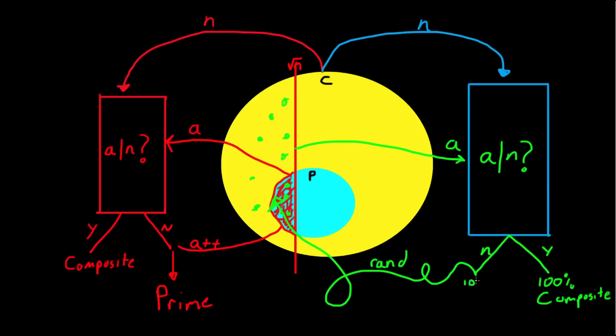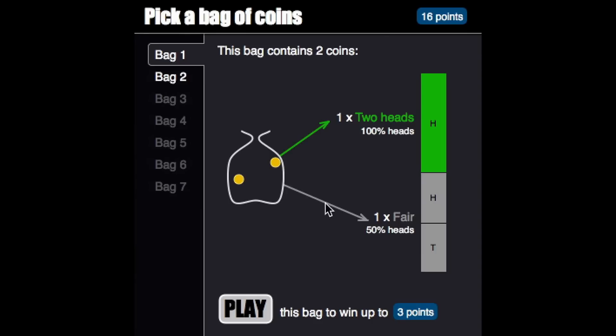And perhaps after 100 or 1000 iterations, we could stop and say it's probably prime with some certainty, say for example 99.9%.